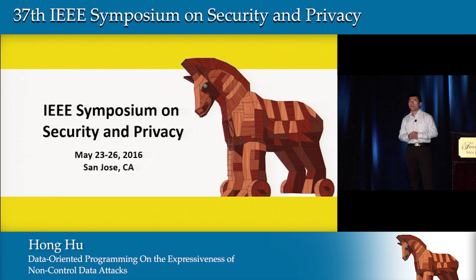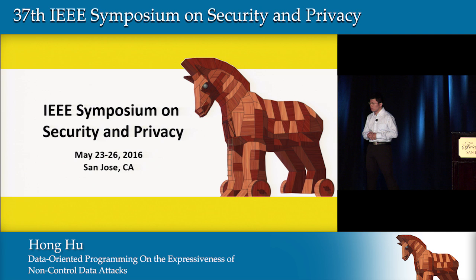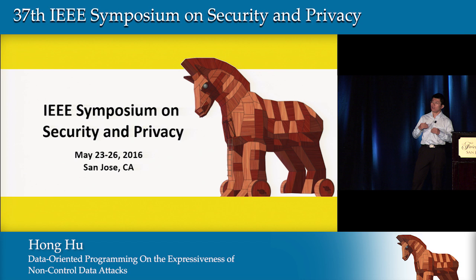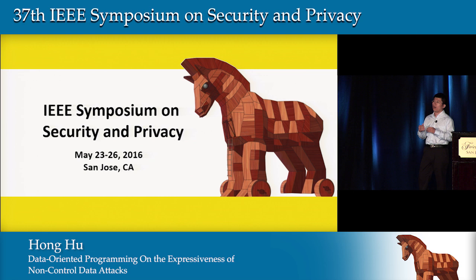Andre Pawlowski from Ruhr University Bochum asked: in the first attack, the presenter claims not to need an information leak to bypass ASLR, but uses a fixed address — where does this fixed address come from without a leak? The presenter explained that the first fixed address is in the global data section and is always loaded to a fixed location when the program is not compiled with the PIE option. Starting from this fixed location, they follow the reference chain through randomized locations seven times to finally obtain the randomized private key address. Crucially, all computation stays within the server program's memory and is never leaked externally.